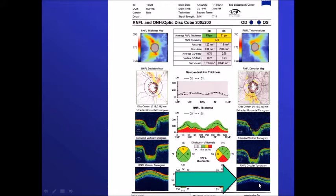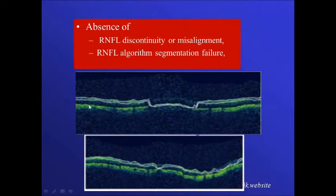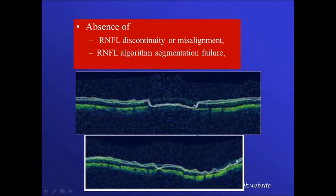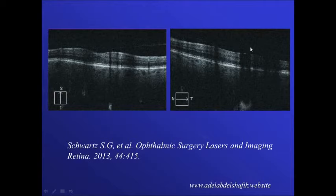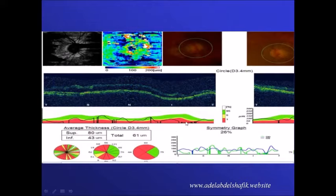Examples of abnormal segmentation: the machine detected the nerve fiber layer correctly in one part, but mistakenly traced it at an abnormally lower level in another. In further examples the segmentation was incorrect in multiple locations. Media opacities can also result in marked, apparently complete loss of thickness in certain areas.